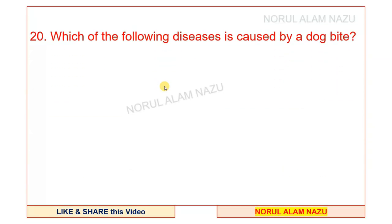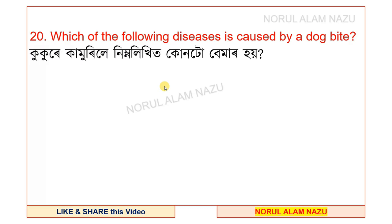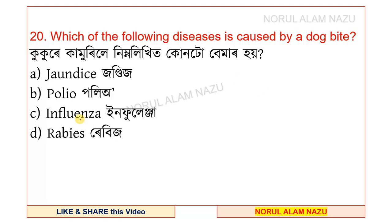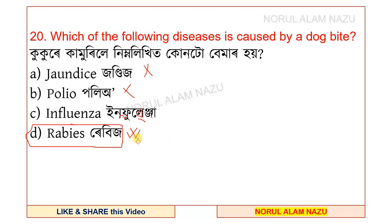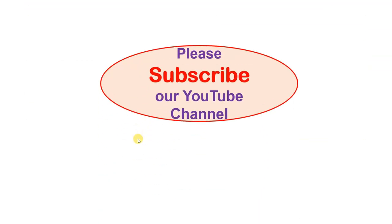Question number 20: which of the following diseases is caused by a dog bite? The options include influenza and rabies. Option D — rabies — is the correct answer. A dog bite causes rabies.